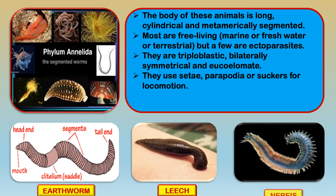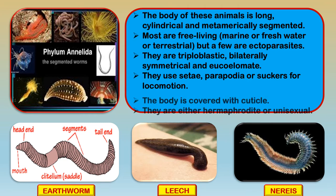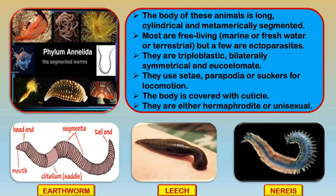Annelids are triploblastic, bilaterally symmetrical, and eucoelomate — meaning they have a body cavity. They use setae, parapodia, or suckers for movement and locomotion. The body is covered with cuticle. These organisms are either hermaphrodite, with male and female reproductive systems in the same body, or unisexual with separate male and female.